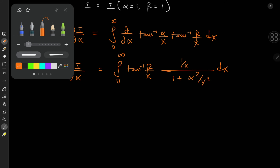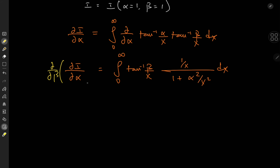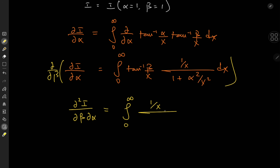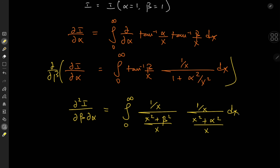Now I'd like to differentiate this thing once again with respect to beta. So we have the second mixed partial, partial squared I over partial beta partial alpha, equal to the integral from zero to infinity. We'll differentiate the arctangent function involving beta this time, so that we have 1 over x, over 1 plus beta squared over x squared, or better yet x squared plus beta squared over x, times 1 over x again, times x squared plus alpha squared over x, dx.